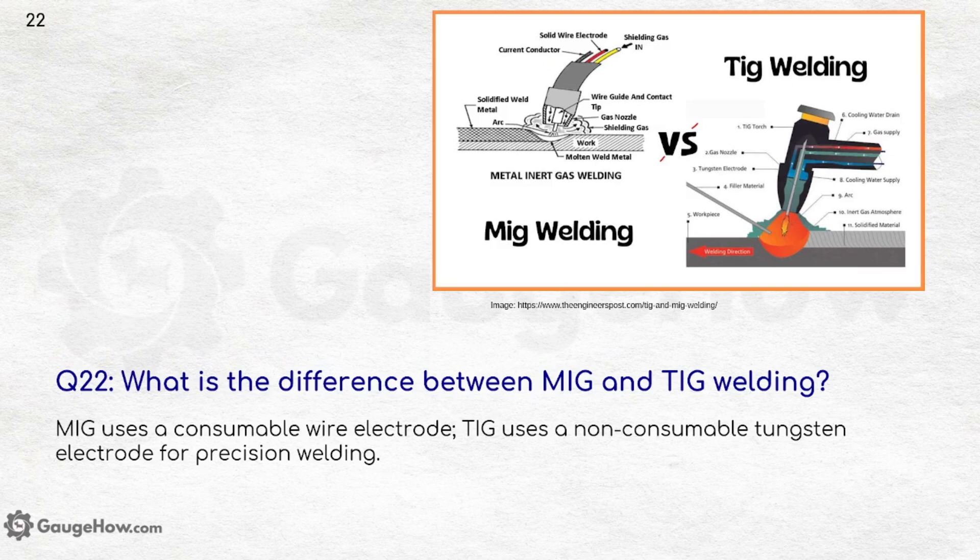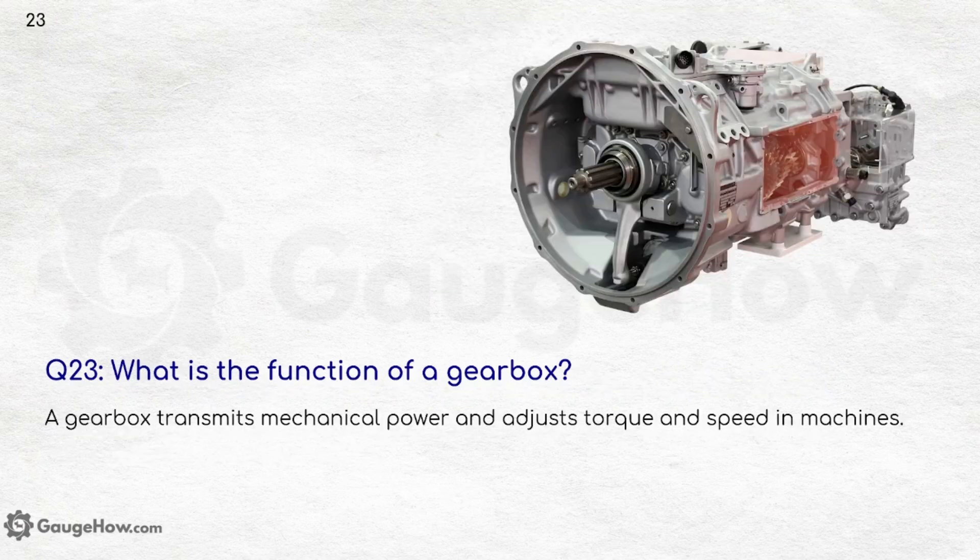What is the difference between MIG and TIG welding? MIG uses a consumable wire electrode, and TIG uses a non-consumable tungsten electrode for precision welding. What is the function of a gearbox? A gearbox transmits mechanical power and adjusts torque and speed in machines.